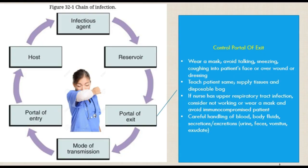The next part of the chain is the portal of exit — the path by which the pathogen leaves its host. It generally corresponds to the site where the pathogen is localized. For example, influenza and tuberculosis exit via the respiratory tract. To prevent this, we have patients wear masks, avoid sneezing or coughing toward patients or open wounds, ensure tissues are disposed of properly, and carefully handle blood and body fluids such as urine, feces, and vomit.